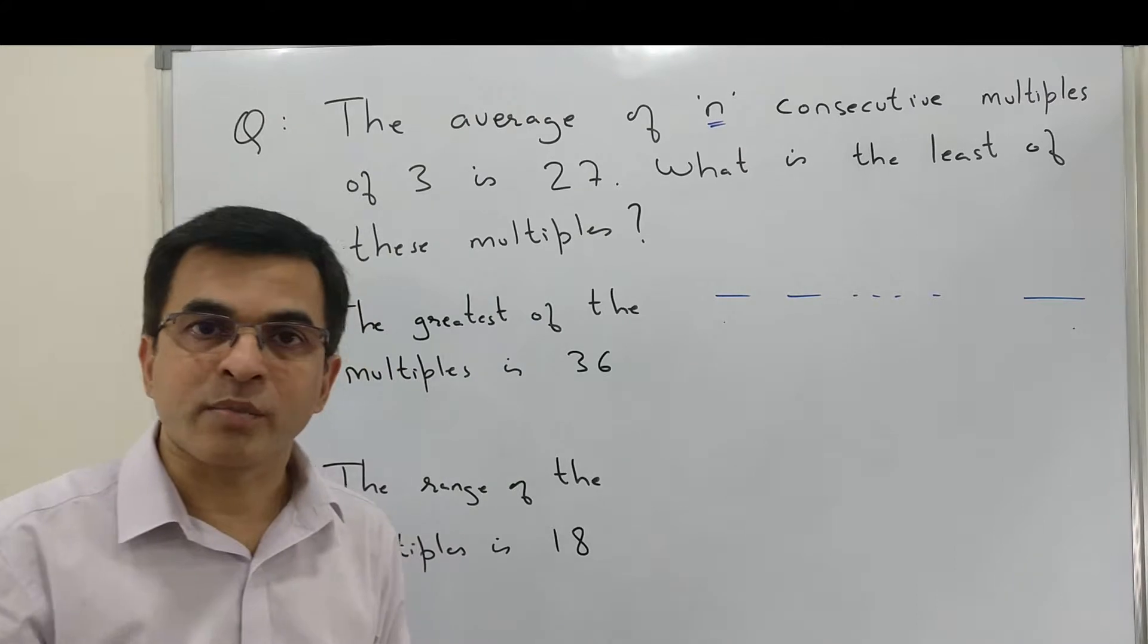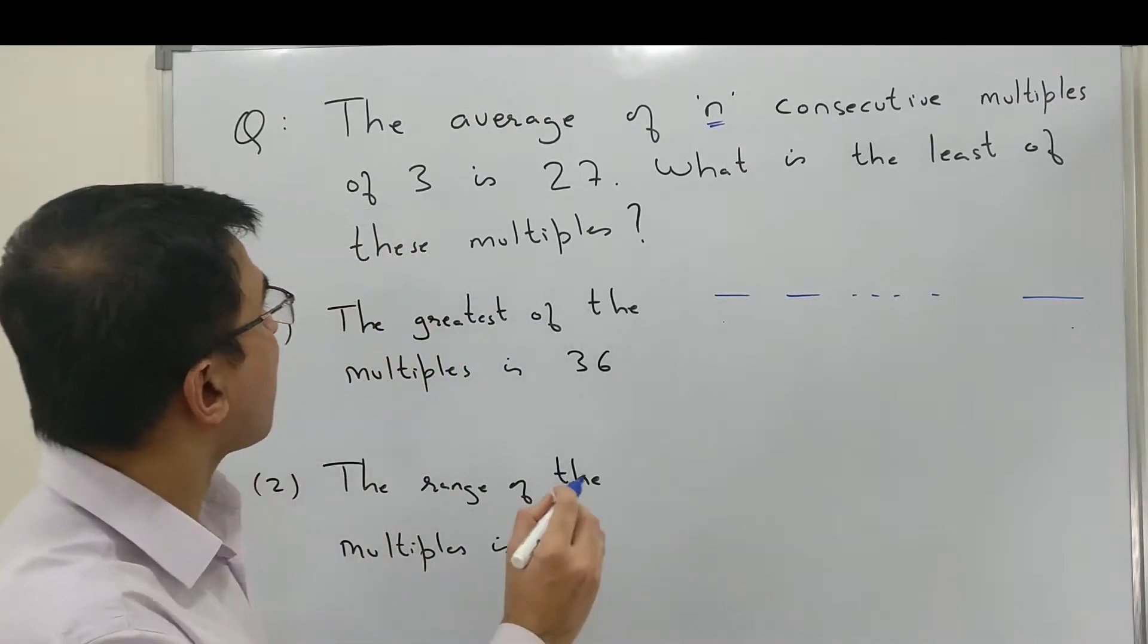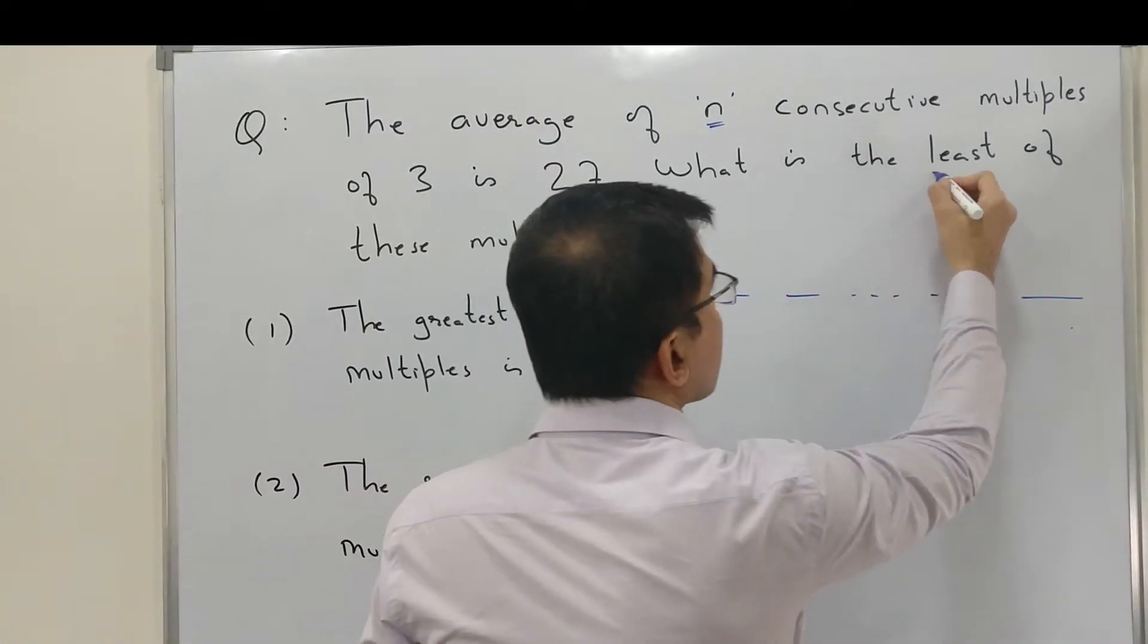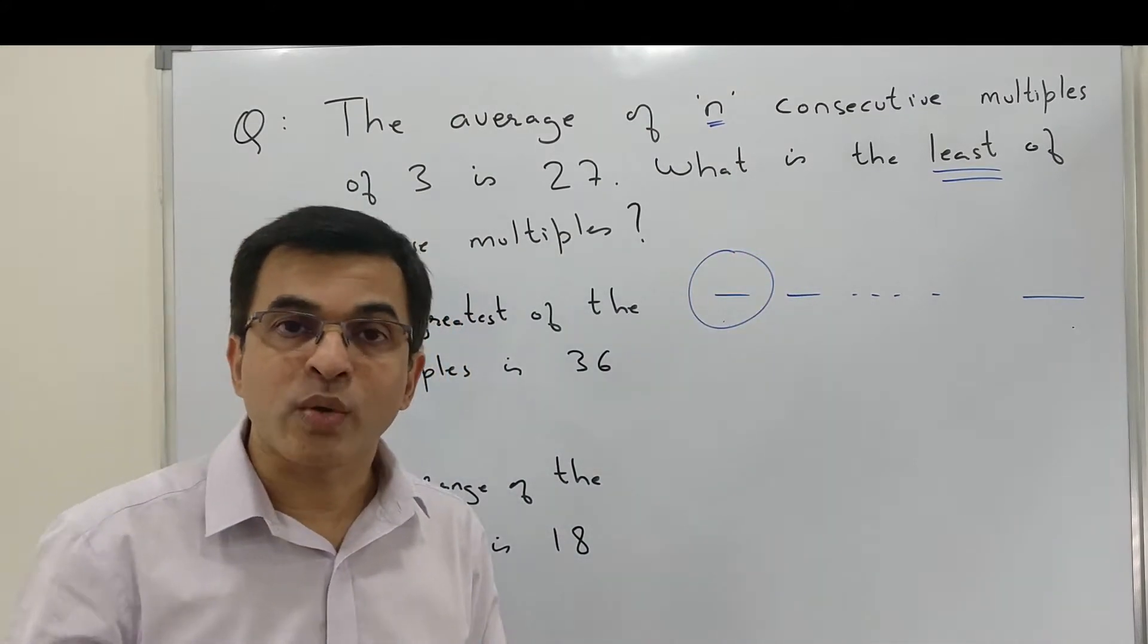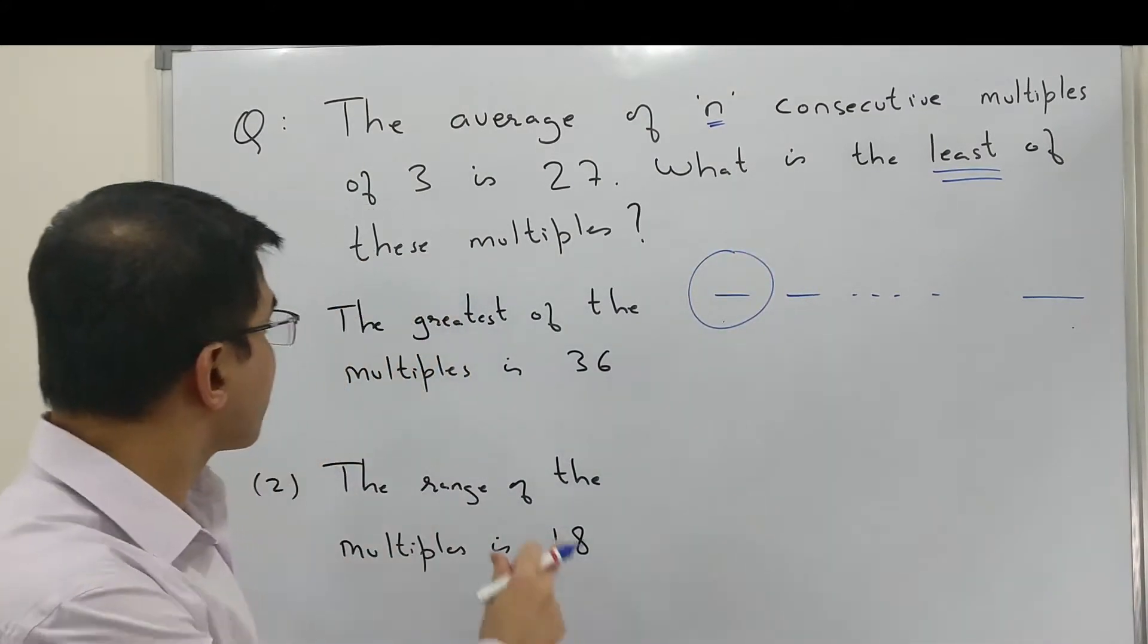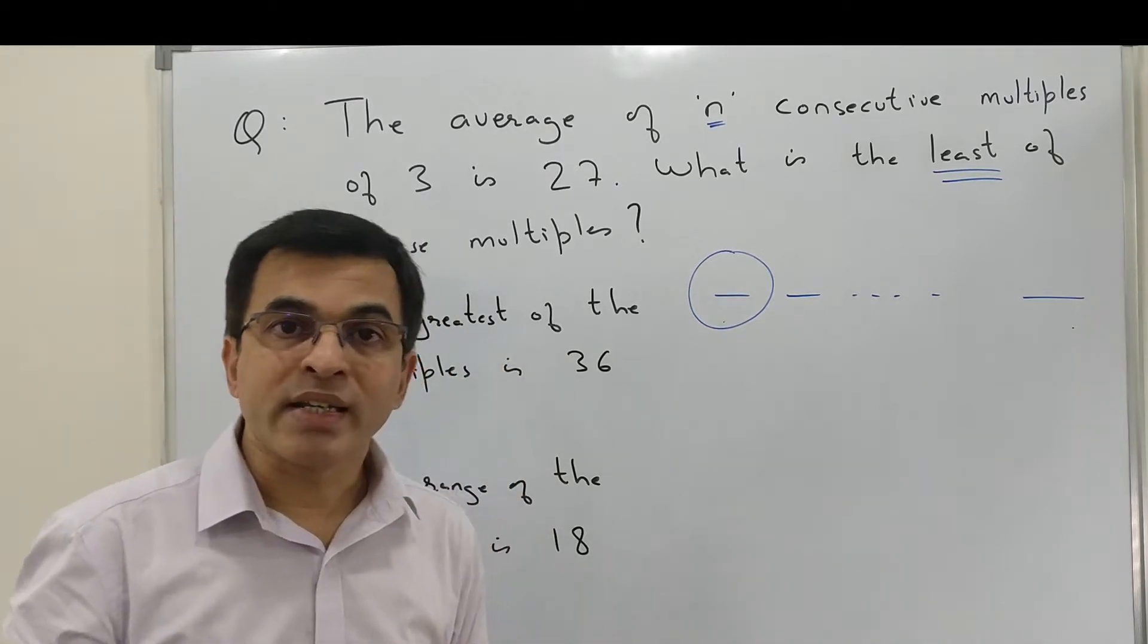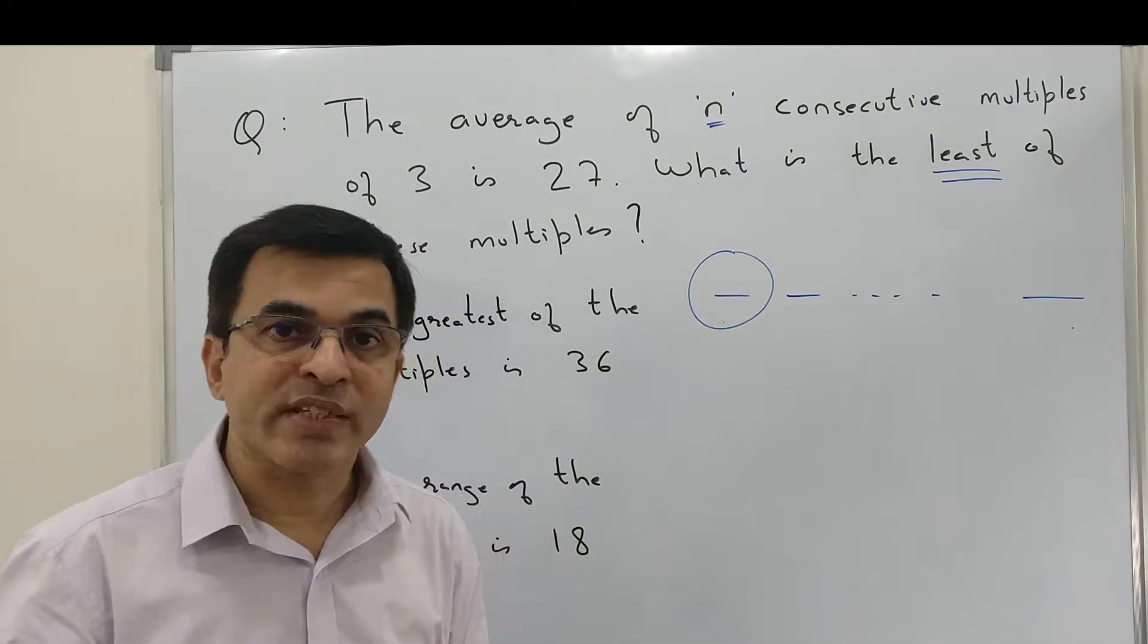Now the question is asking us for the least, which means the lowest value of the AP. Statement number one is giving us the highest value of the AP, which is 36.